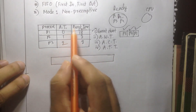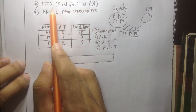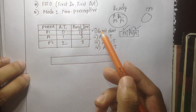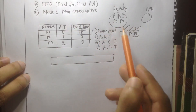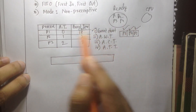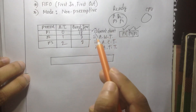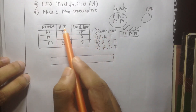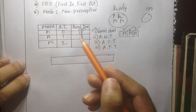So the process is first-in-first-out. The CPU is ready to go to the first one. We look at the arrival time to see which process arrives earlier.